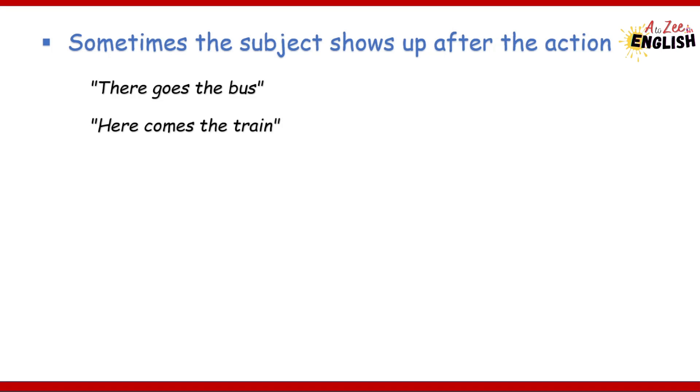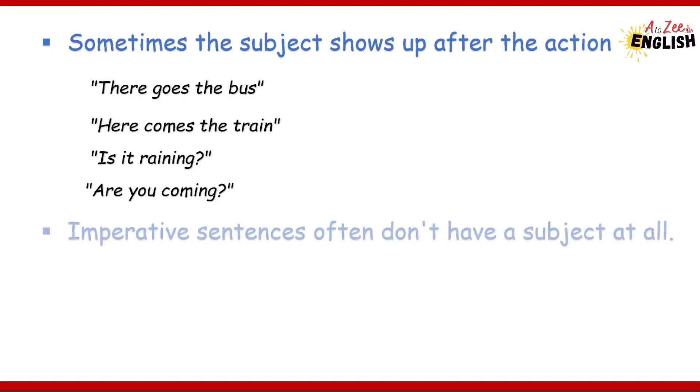Similarly, in questions like 'Is it raining?' or 'Are you coming?' the subject - it and you - follows the verb. So sometimes the subject doesn't lead the sentence, but still plays a crucial role in conveying the message.